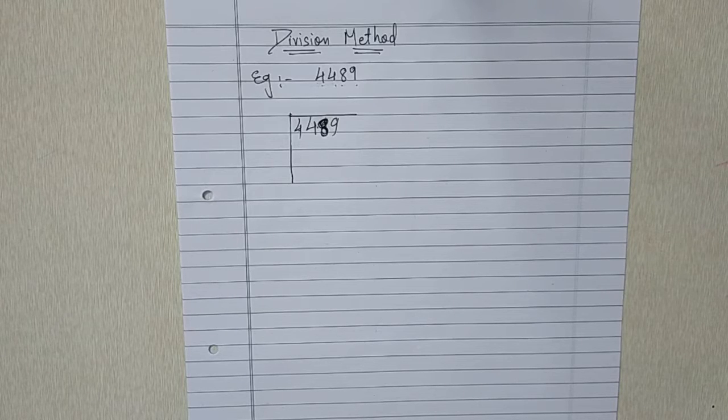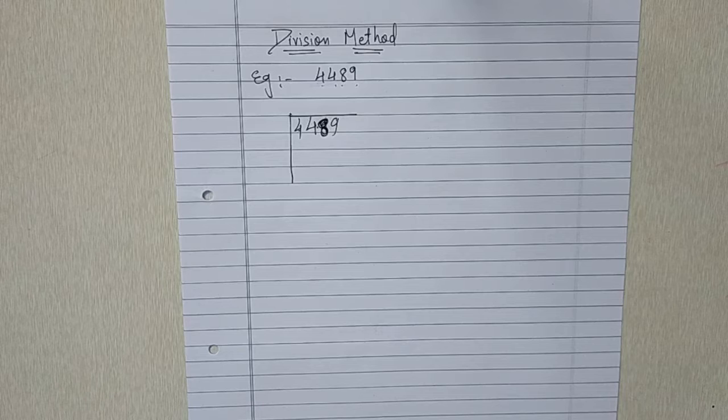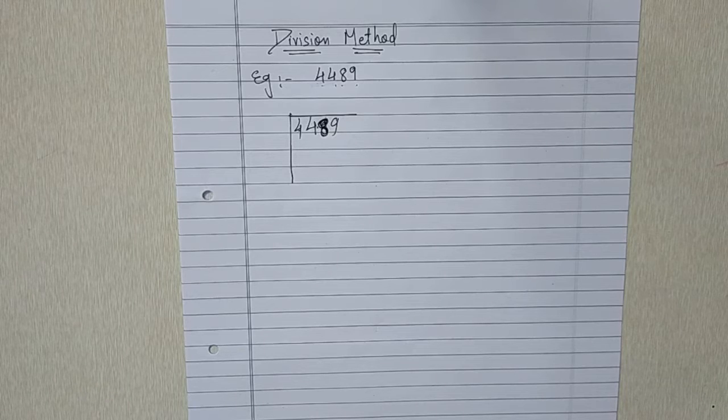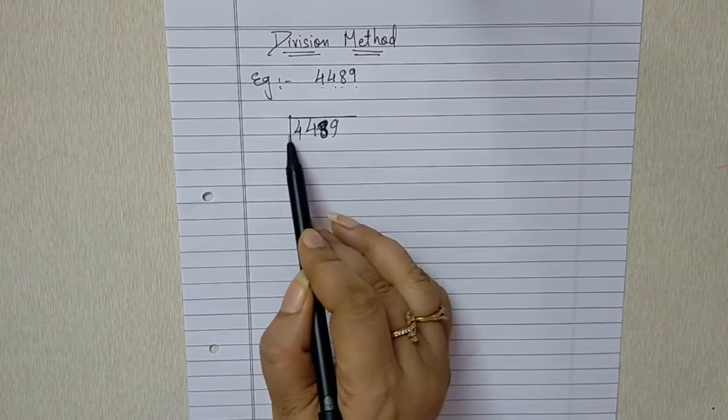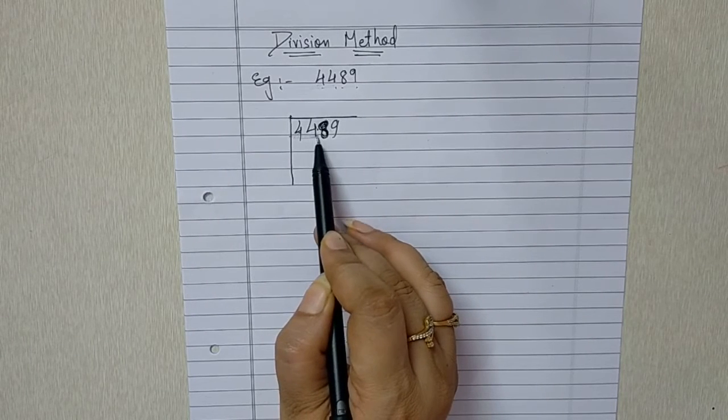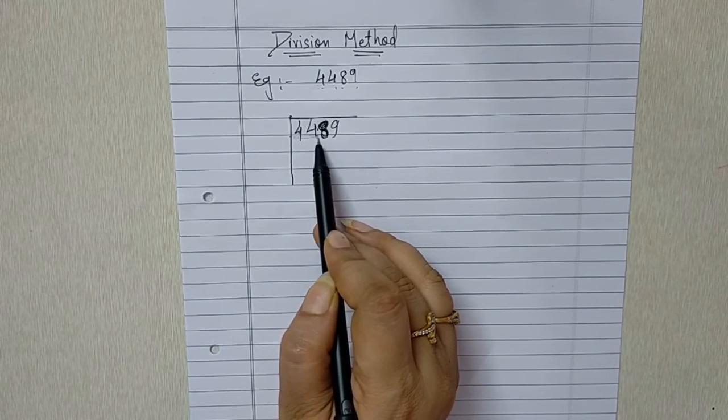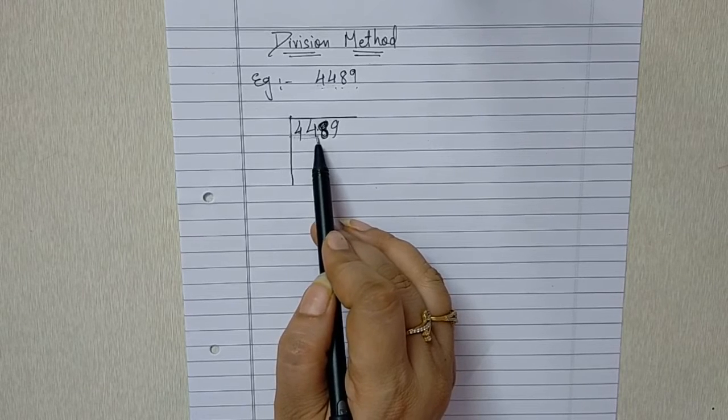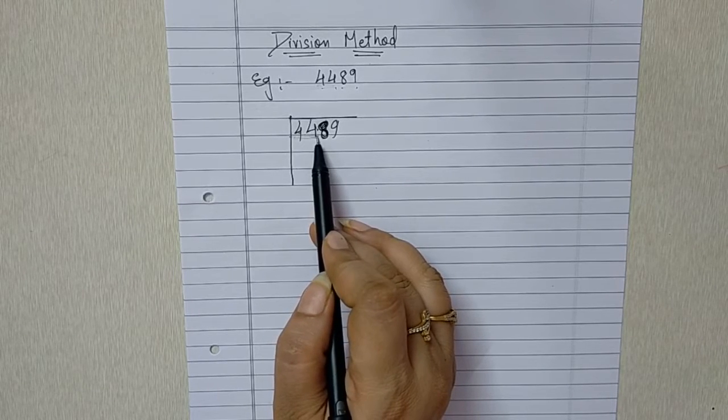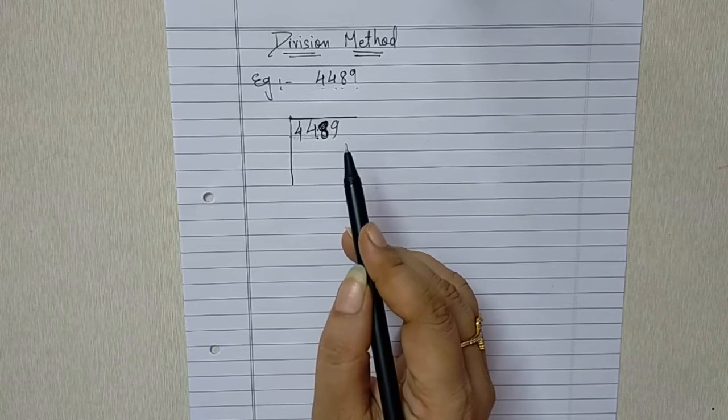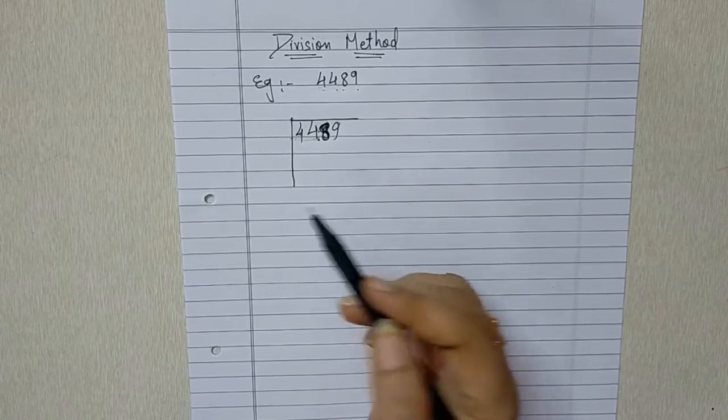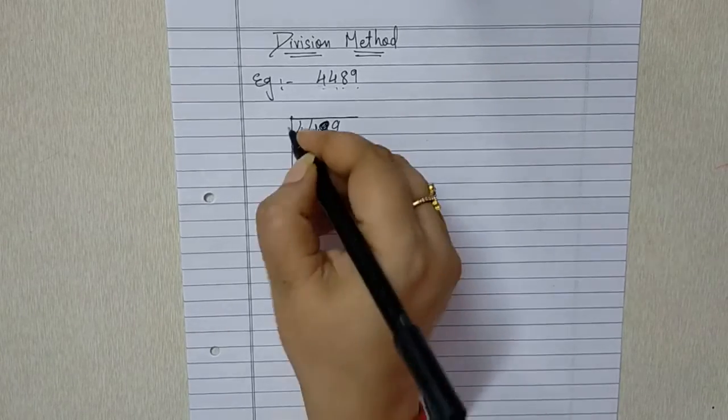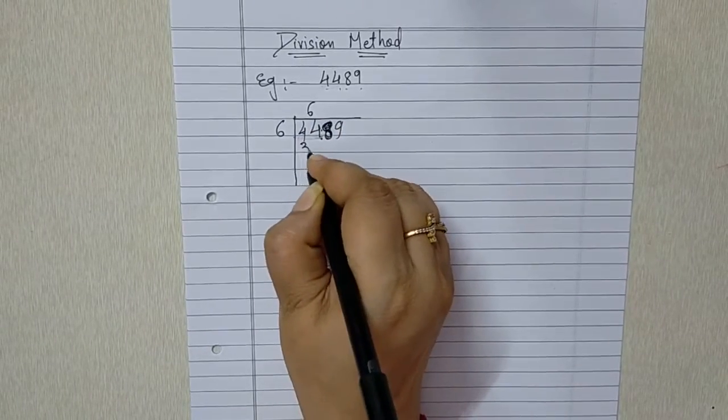So 2×2=4, 3×3=9, 4×4=16, in that manner only you can go. So 44. Is 44 a square number? No, it is not. So we have to take any square number less than 44. So 6×6 are 36. It is less than 44 and 7×7 are 49. That will exceed 44. So we have to take 6×6 are 36.